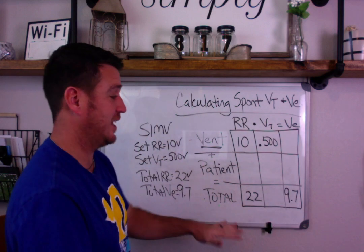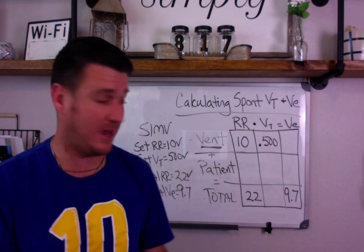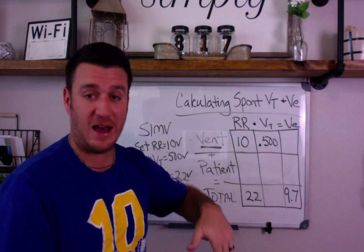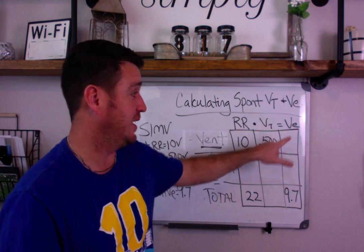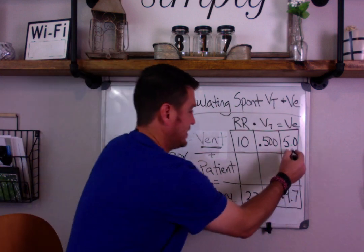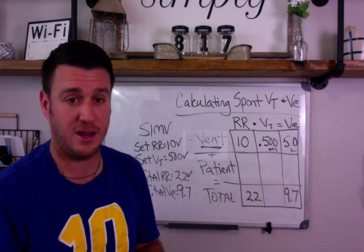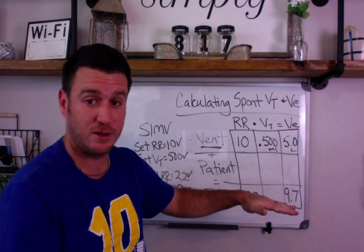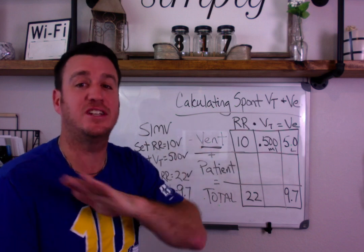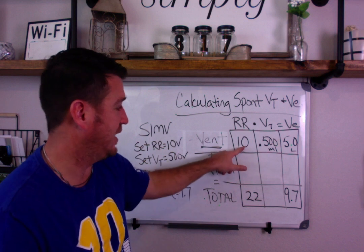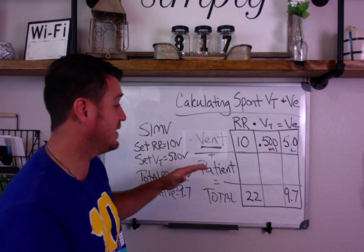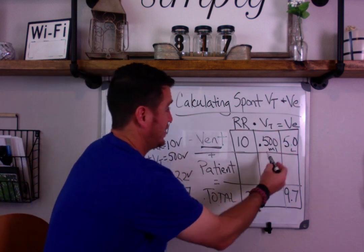Starting with the vent side: a set rate of 10 times a tidal volume of 500 gives us a set VE of 5.0 liters. So 5.0 liters is what's coming from the ventilator. If your patient doesn't breathe at all, they will still get 10 breaths per minute at 500 mL — giving 5 liters per minute of minute volume guaranteed by the vent.